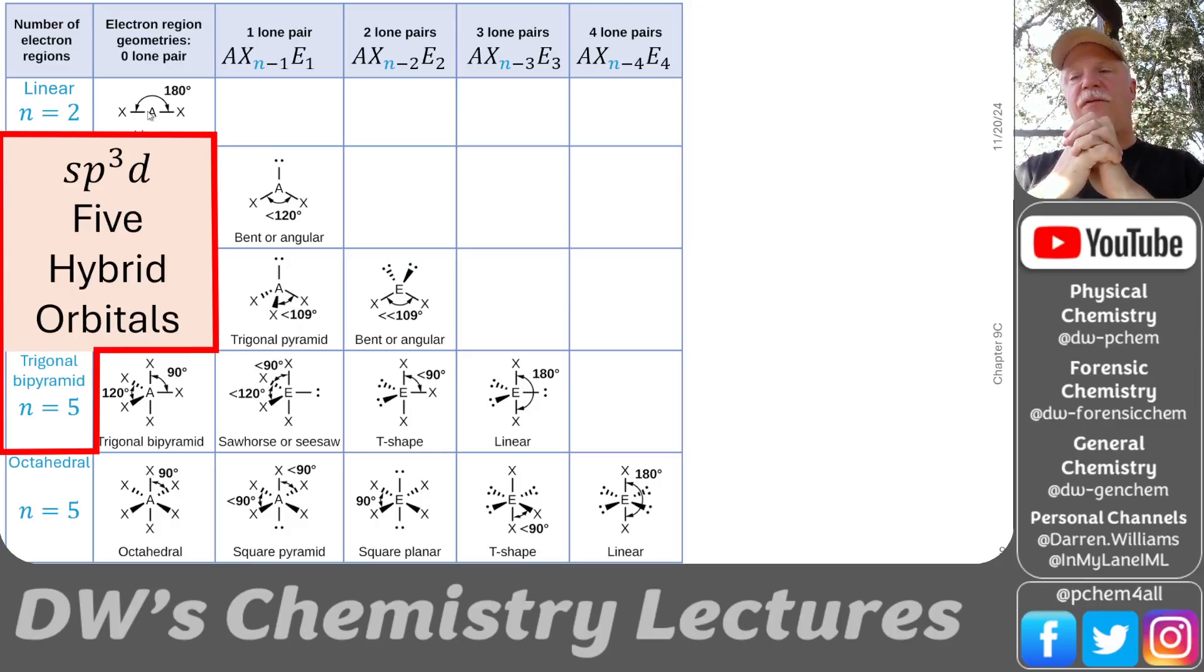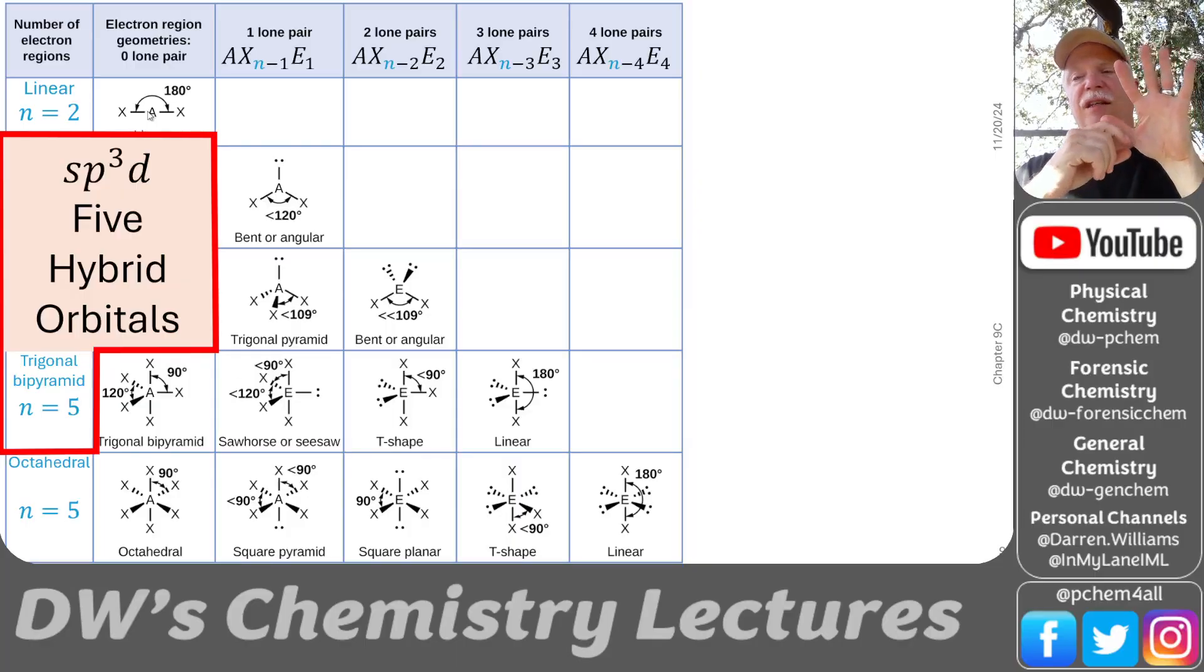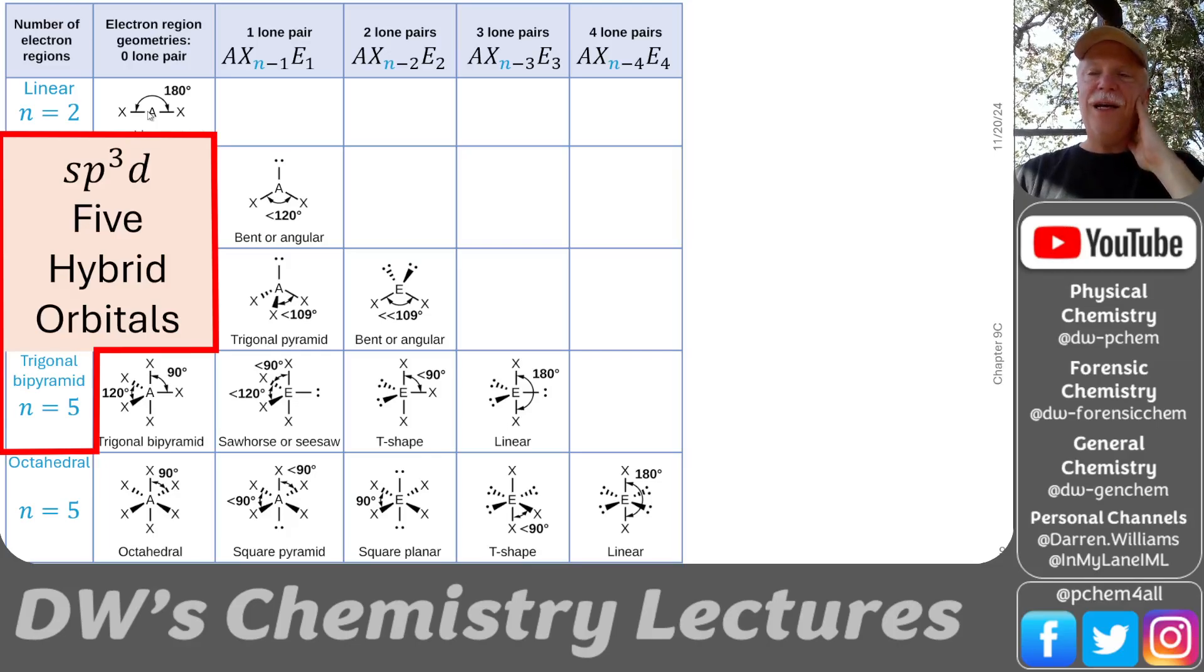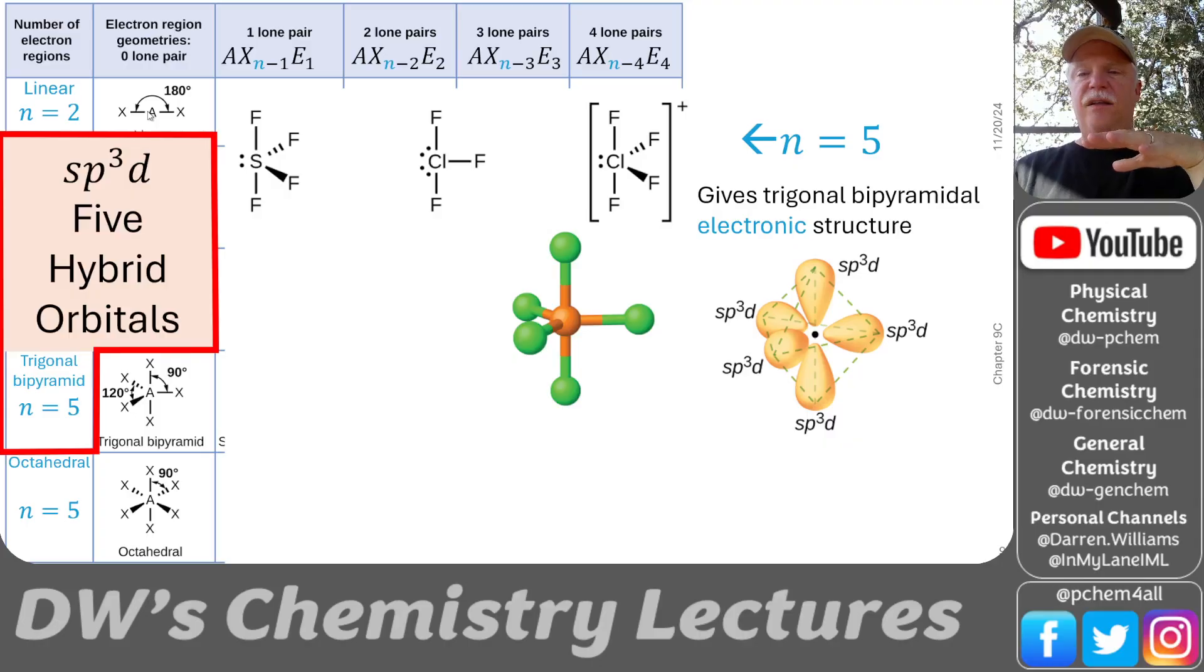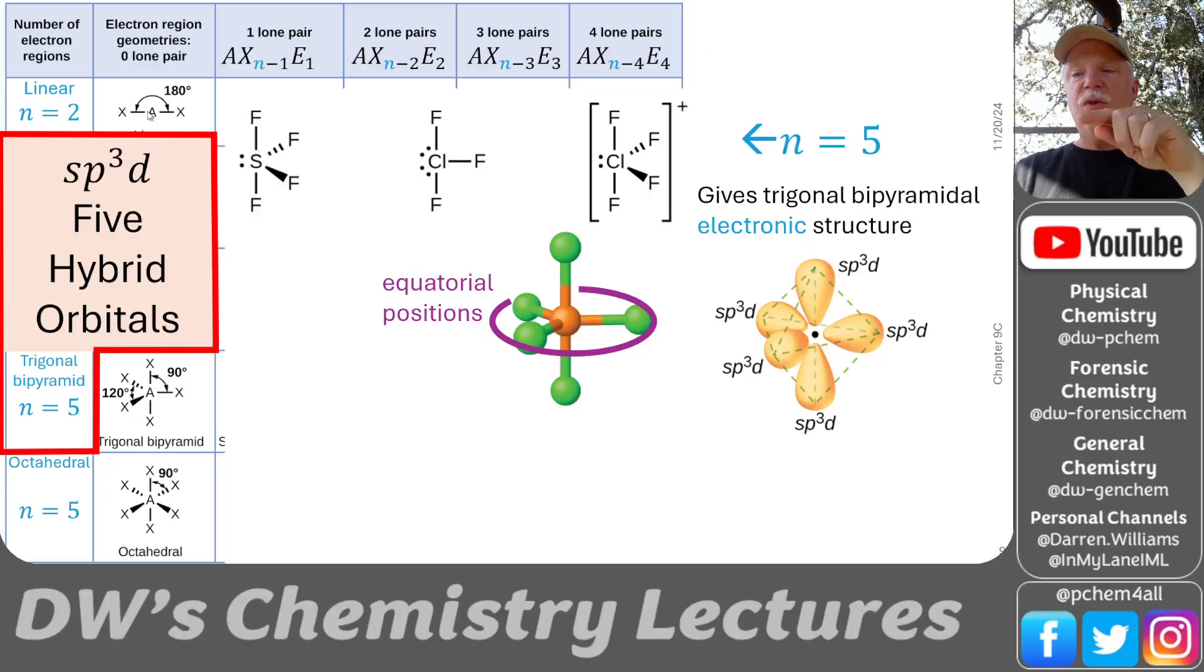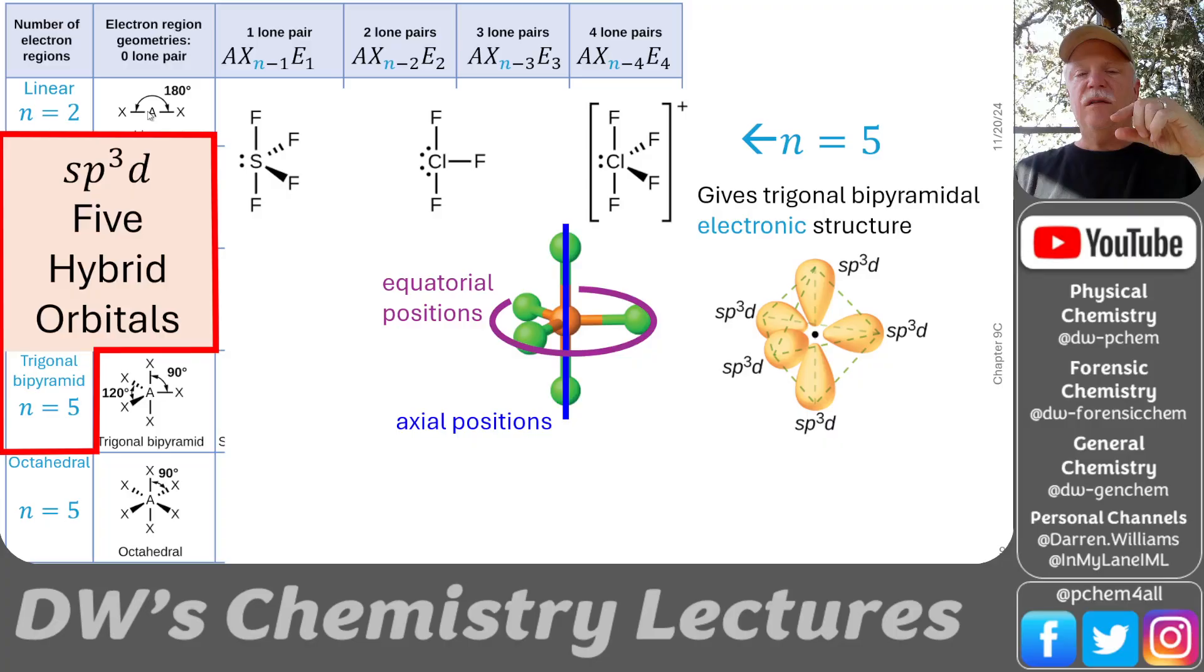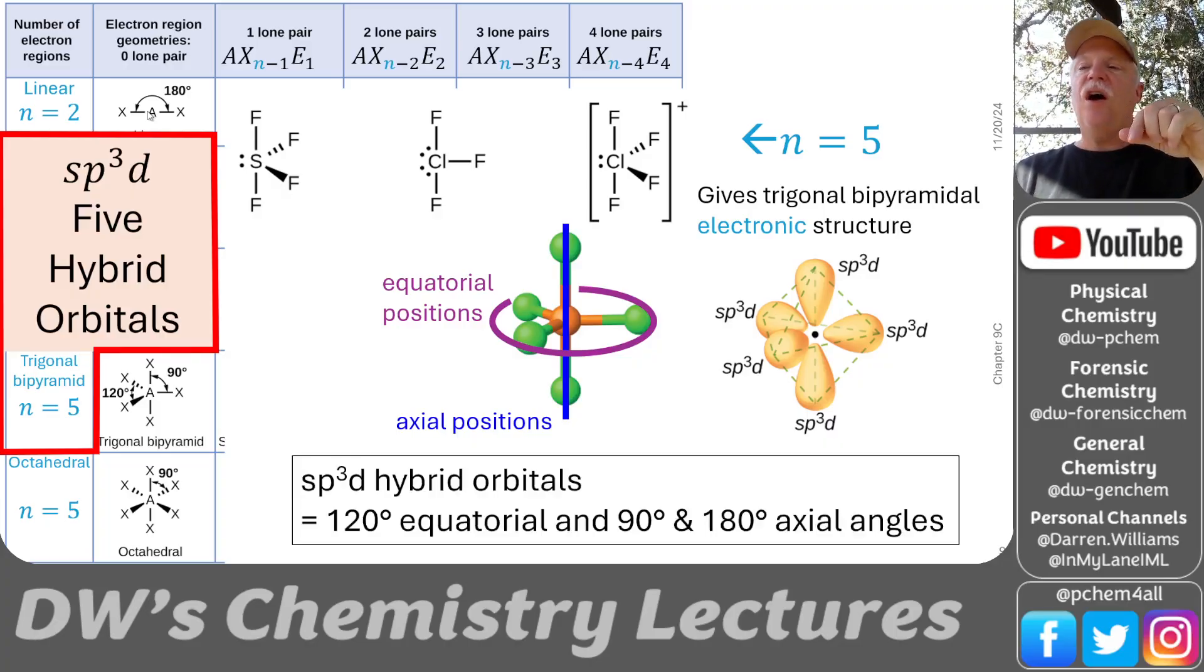What about the trigonal bipyramid? We need five. So how do you get five when you only have an s and three p's? Well, you've got to bring in a d orbital. So we've got an s orbital, three p orbitals, and a d orbital. So this is sp3d. You bring all five of those orbitals together and hybridize them mathematically. And you get five identical sp3d hybrid orbitals. Each of them can contain two electrons. And they go around that central atom. In this situation, you've got some geometric names that are helpful. You've got equatorial positions and axial positions. The equatorial positions are 120 degrees apart. And then the axial positions are 90 degrees from the equator or 180 degrees from each other.